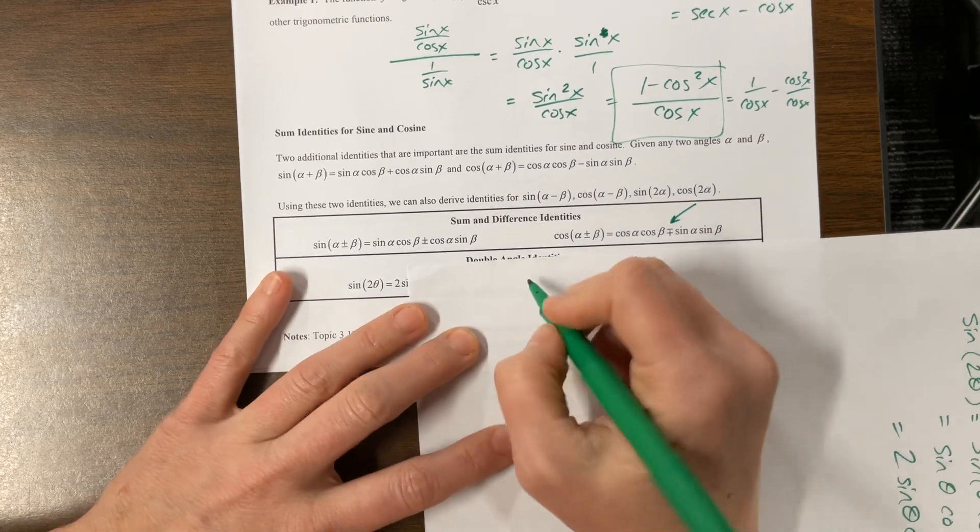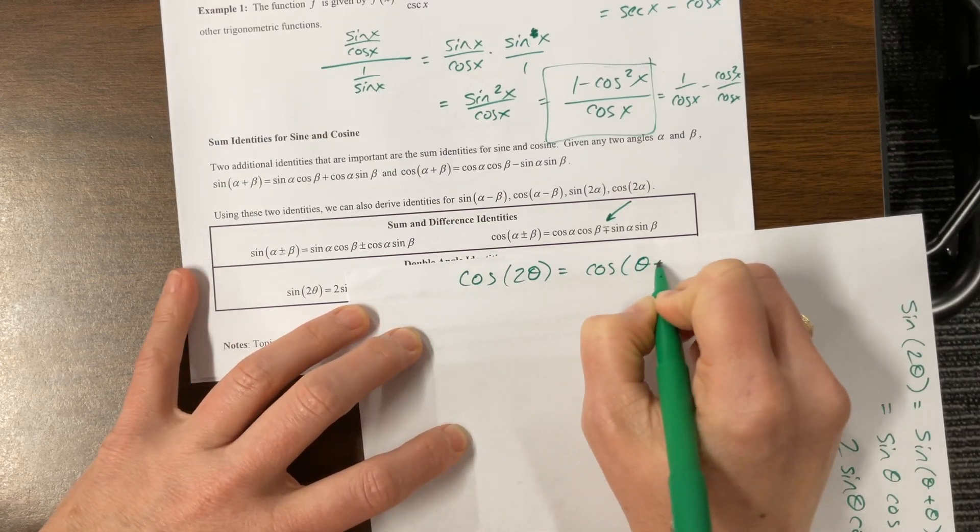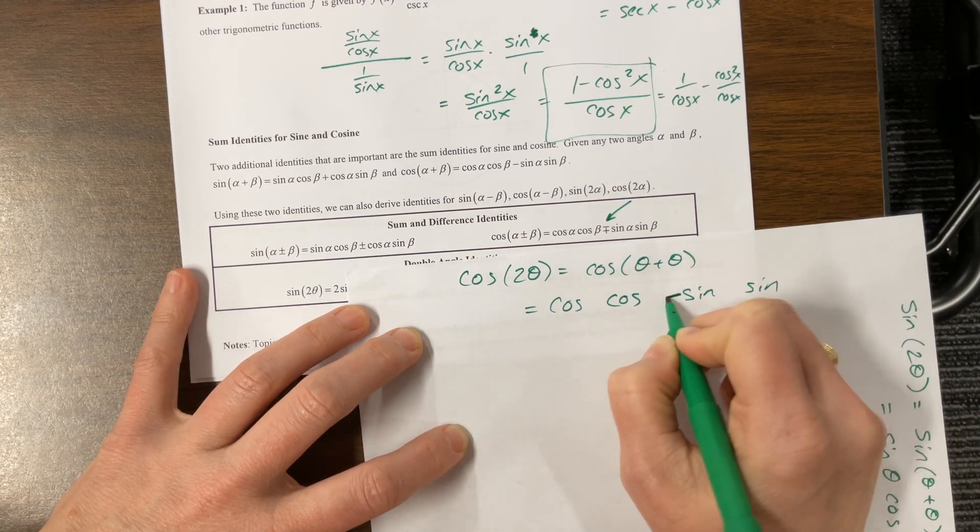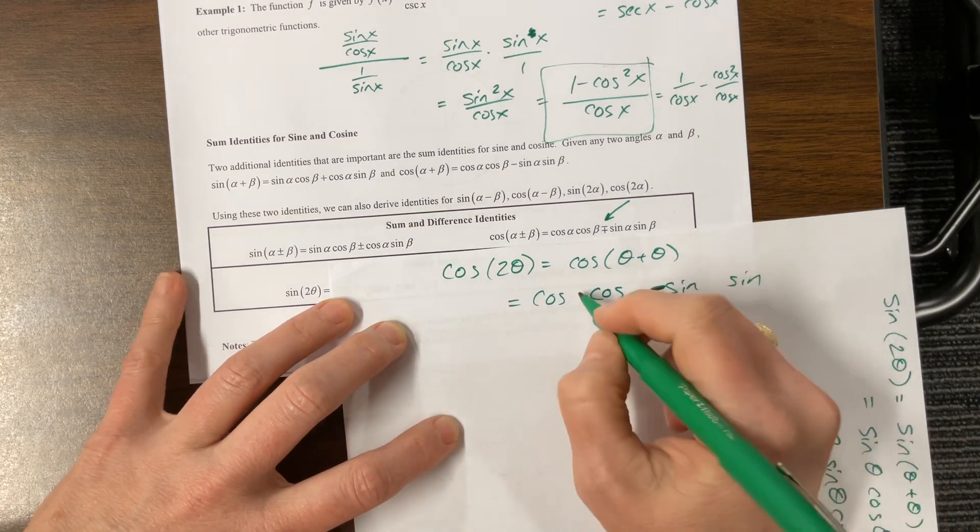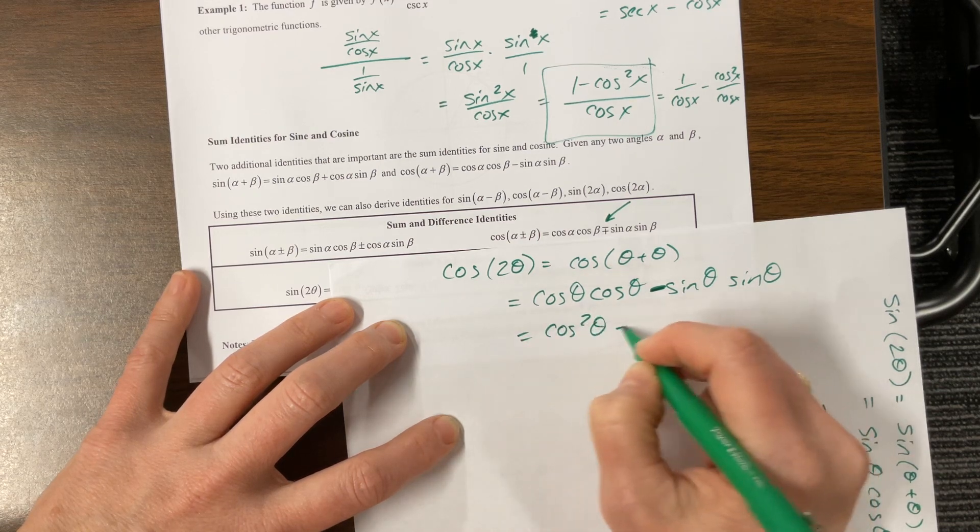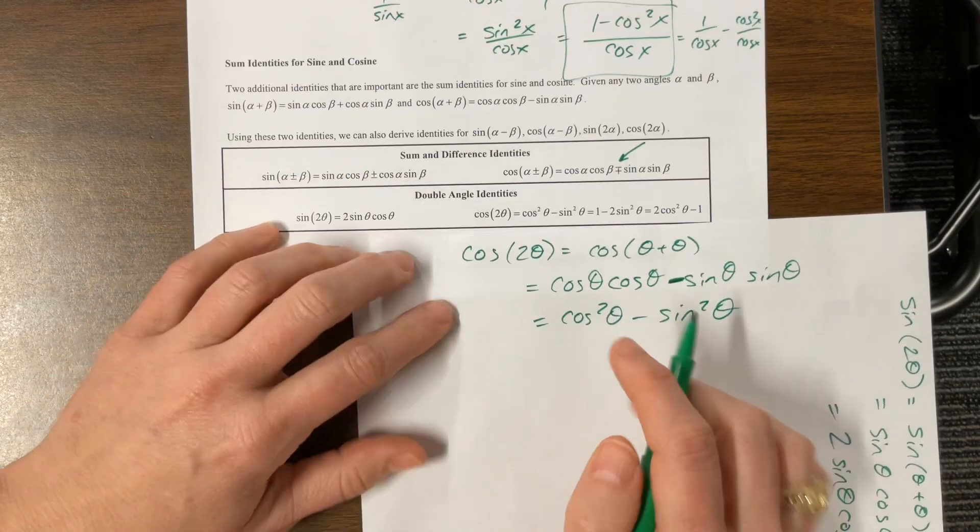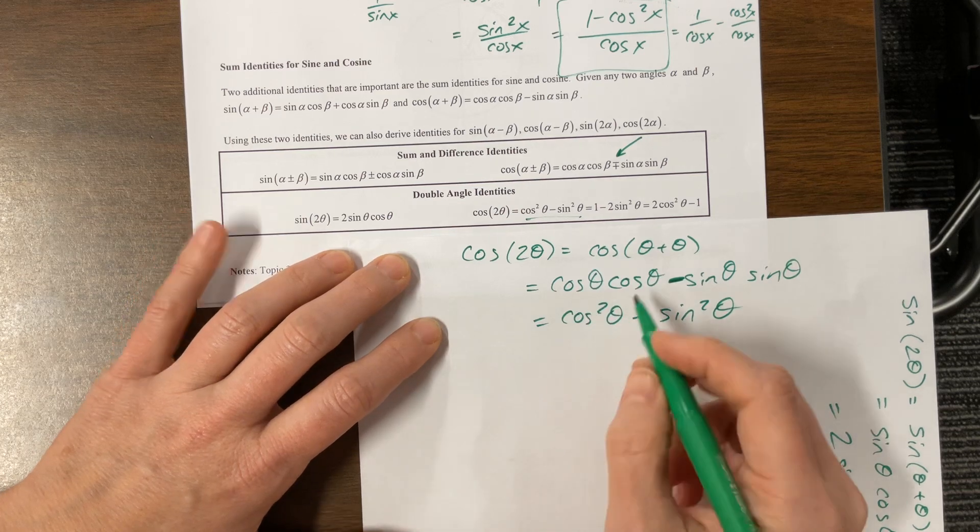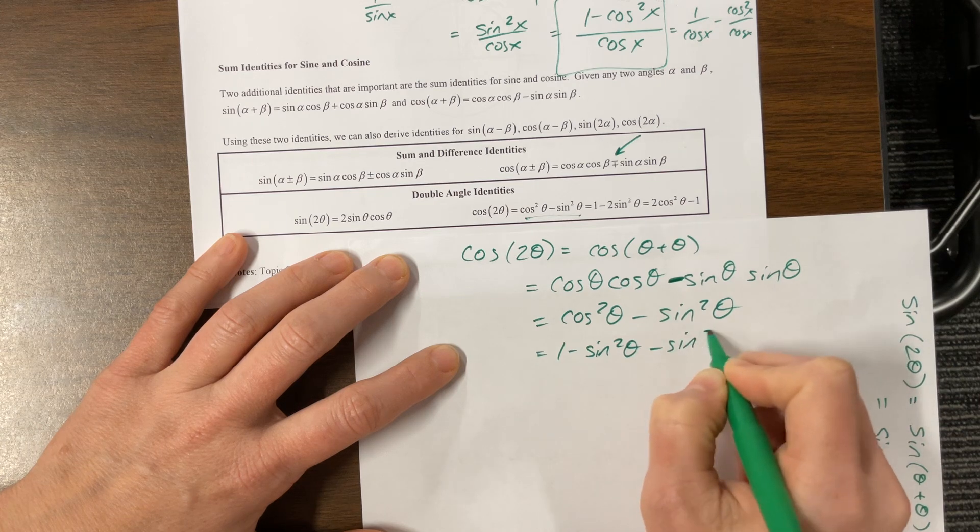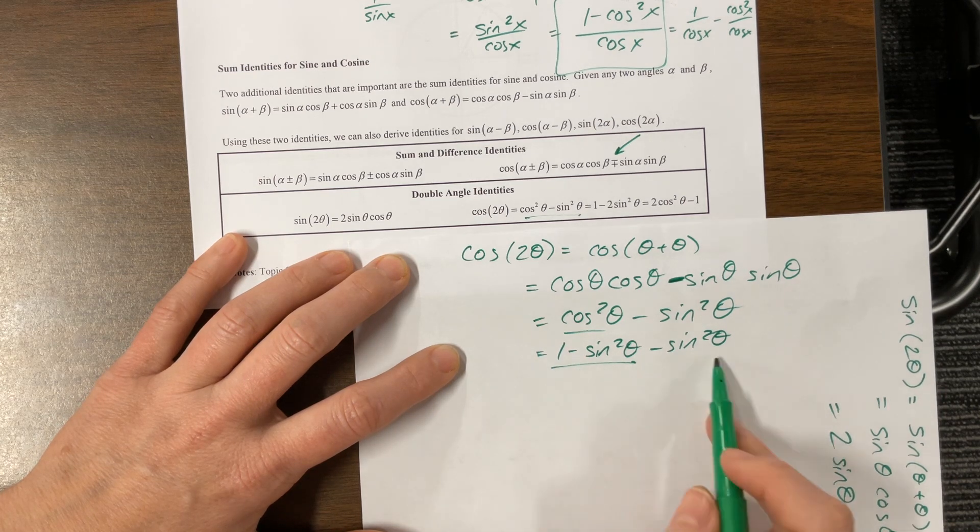The other one is with cosine. So we'll do cosine of 2θ would be equal to cosine of θ + θ. The way that I remember the cosine one is cosine cosine sine sine with the opposite sign. And then we have, the only angles that I have are θ, so θ θ θ θ, and this gives me cos²θ - sin²θ. And then we can use the big daddy, so this is one option, this first one right here.